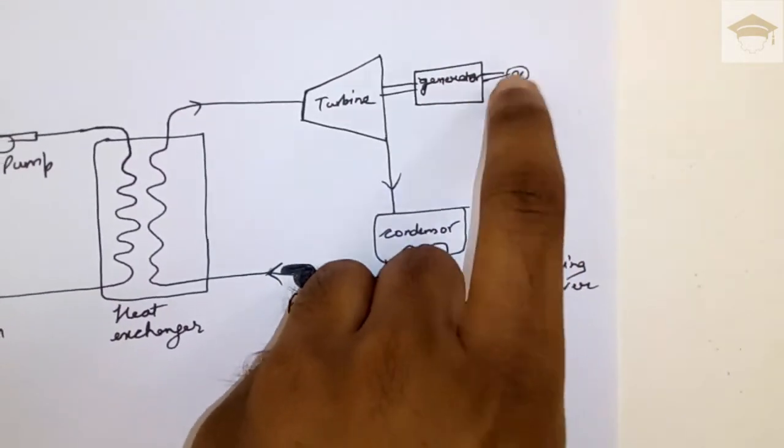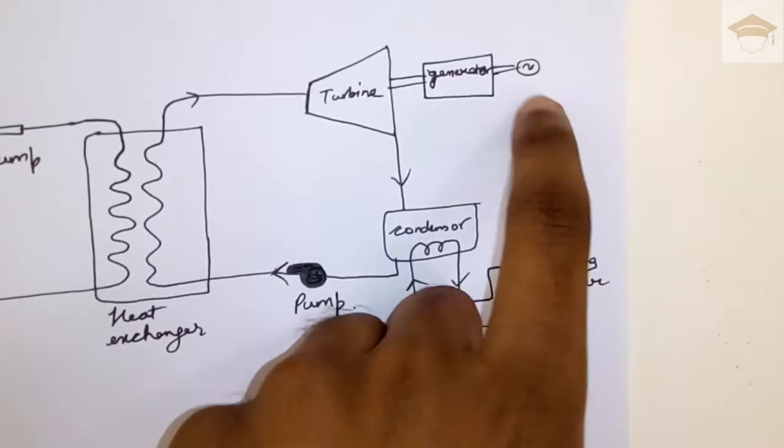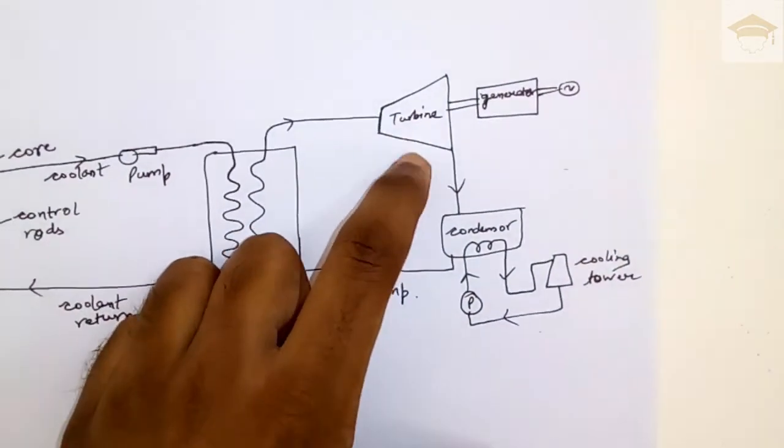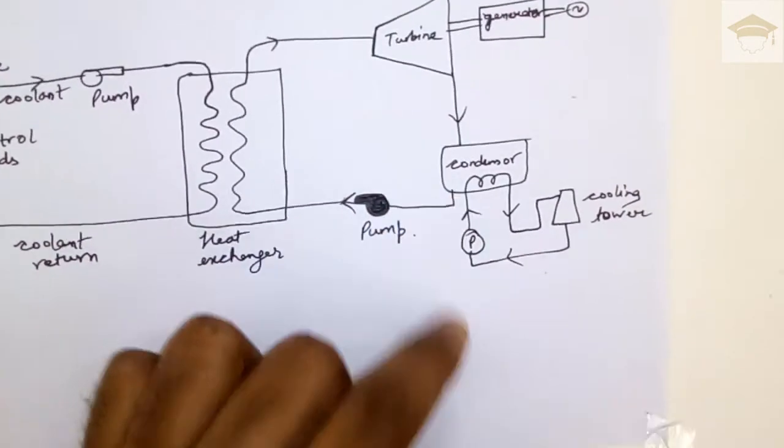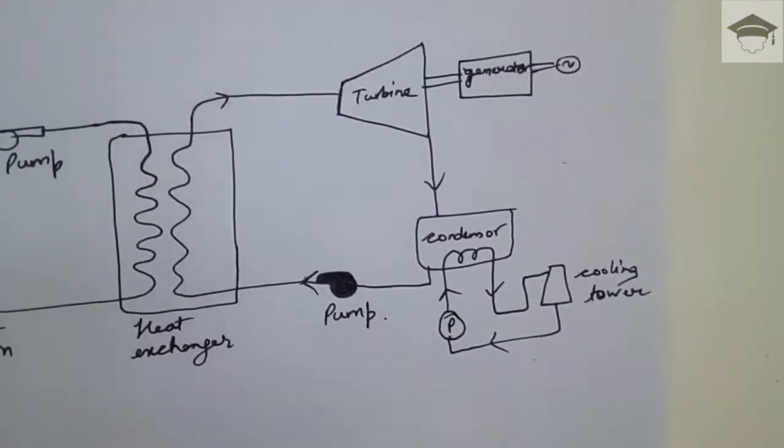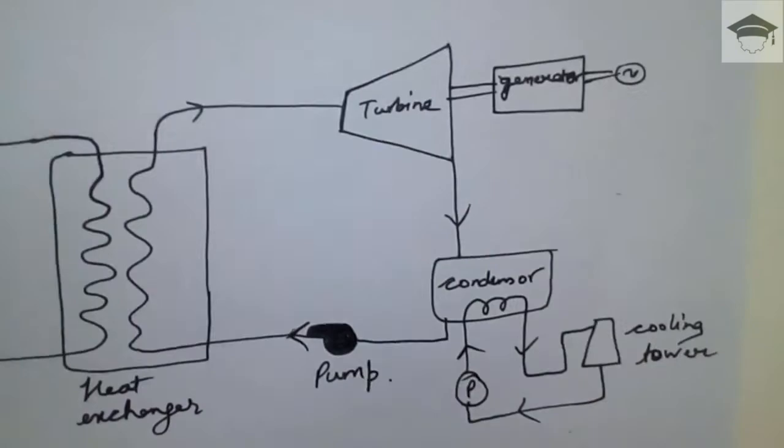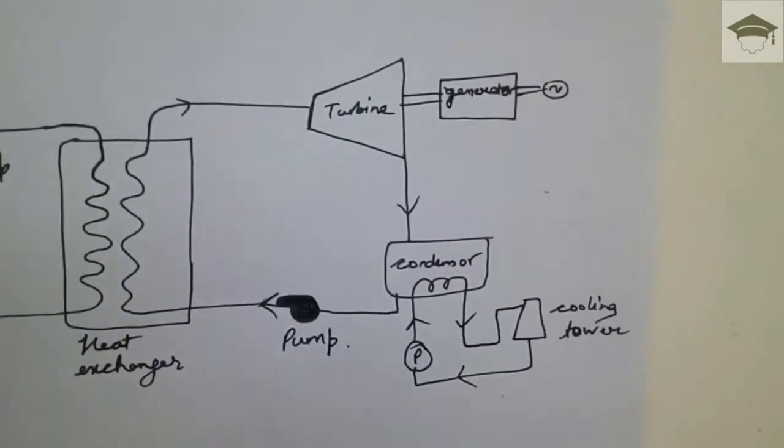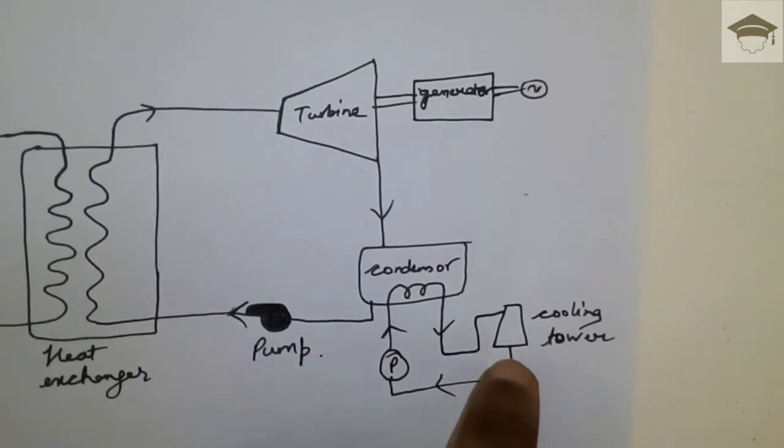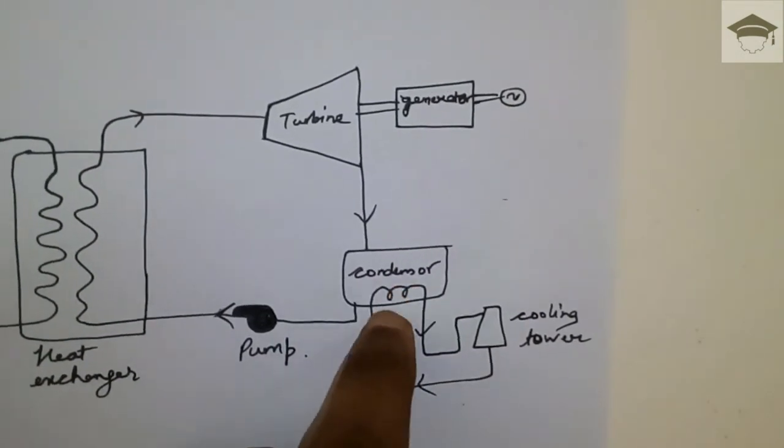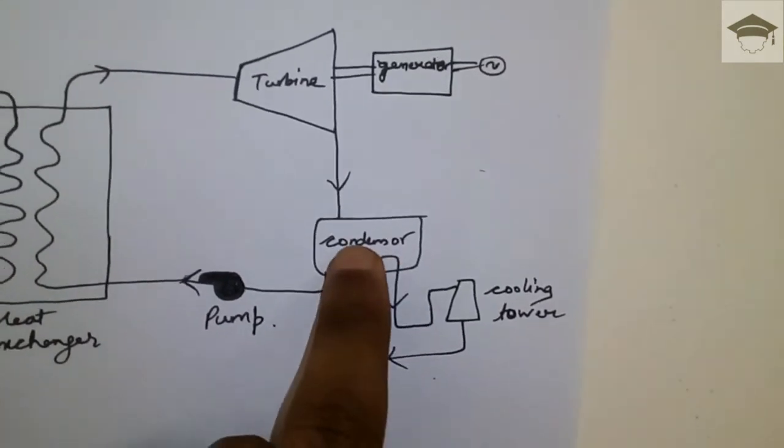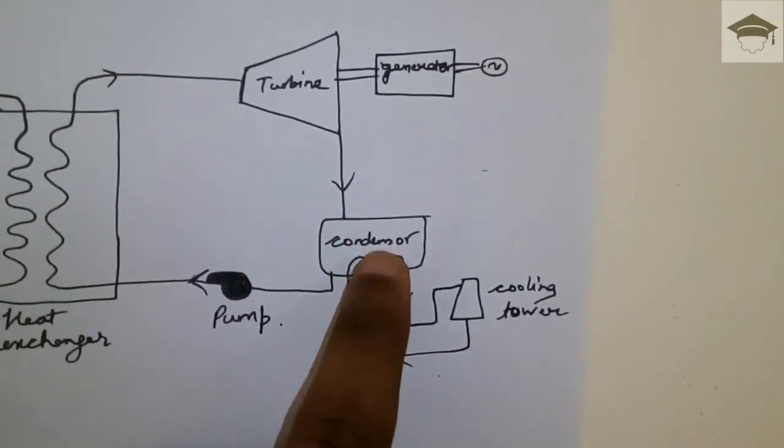The steam after passing through the turbine is made to pass through the condenser. In the condenser, the cooling water is circulated so as to cool the steam back to saturated water. So here, cooling water is pumped. It takes the heat from this steam and converts the steam into saturated water. This water is again pumped back into the heat exchanger.